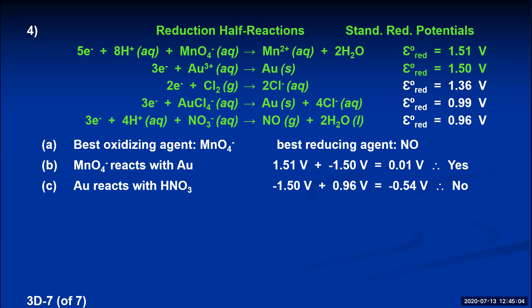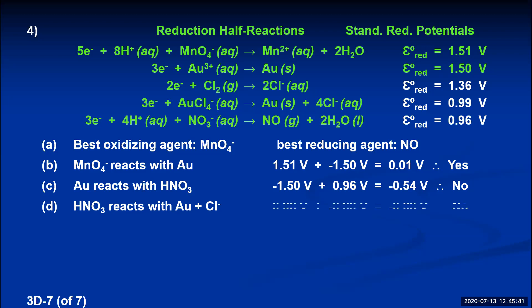Part D: will nitric acid oxidize metallic gold in the presence of chloride ions? Translating: will nitric acid react with gold when chloride ions are present? The bottom reaction has nitric acid on the reactant side — that voltage is 0.96. Now we need gold with chloride ions, which is the fourth reaction. The product side has gold plus chloride ions; reversing it puts them on the reactant side and changes the voltage to negative 0.99. Adding those voltages gives a negative number — therefore this reaction will not occur.